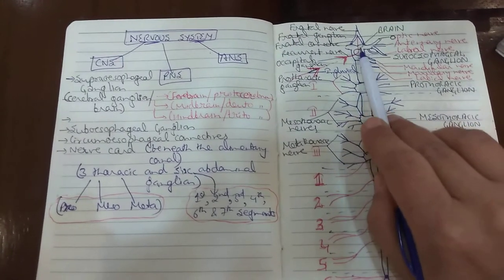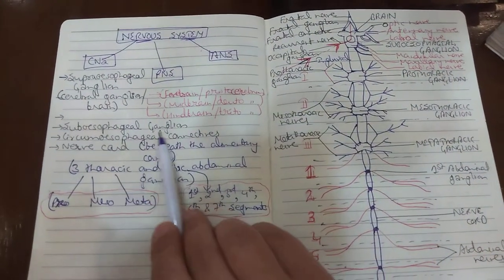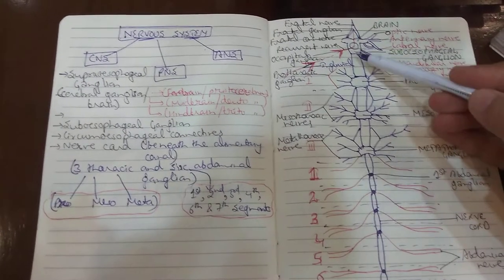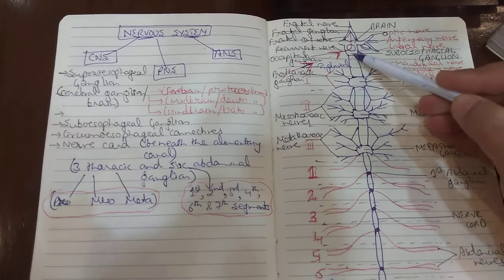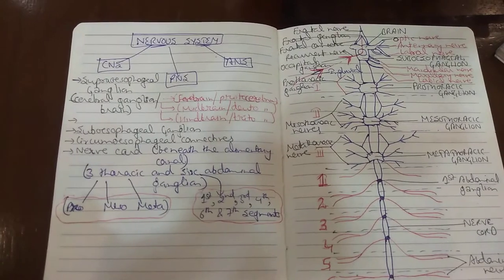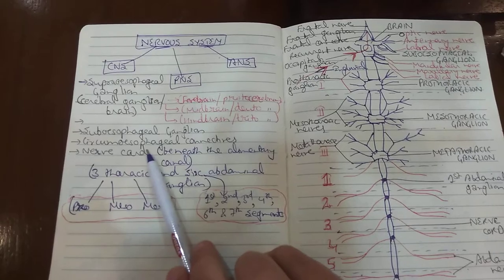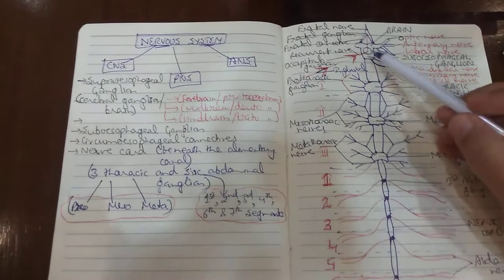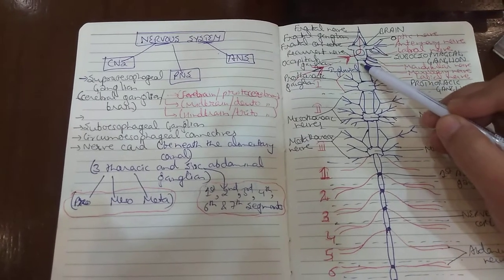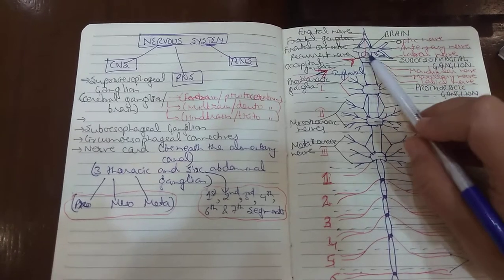Then comes the subesophageal ganglion. The subesophageal ganglion also lies in the head region. It is present beneath the esophagus, therefore it is referred to as the subesophageal ganglion. Like the supraesophageal ganglion, it is also formed of three pairs of ganglia. Then come the circumesophageal connectives, which connect the supraesophageal ganglion with the subesophageal ganglion, and as a result a ring is formed around the esophagus.